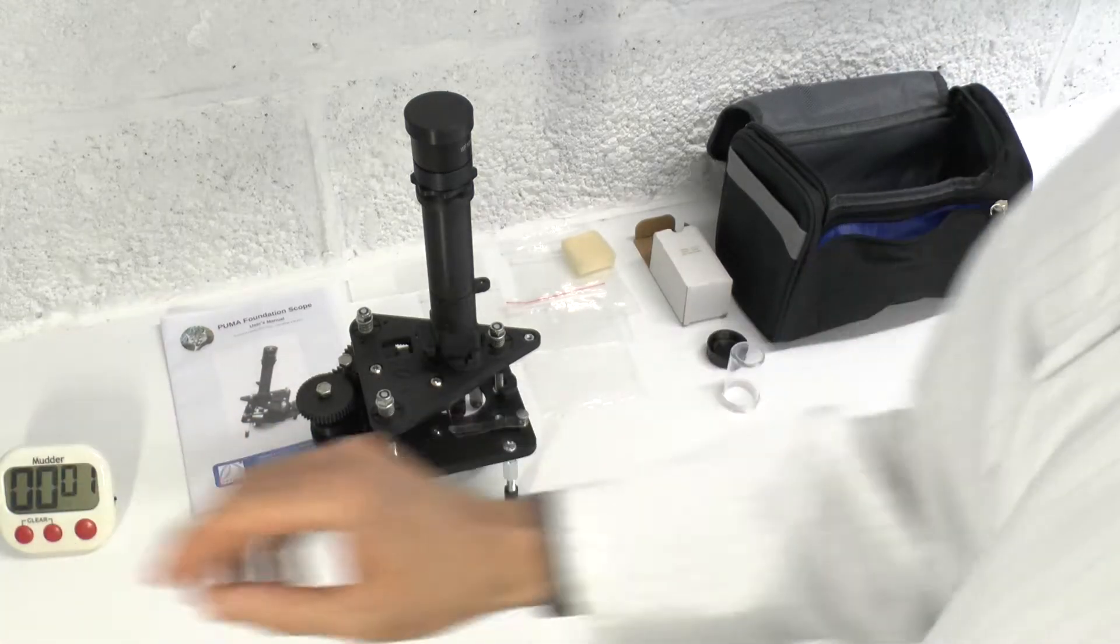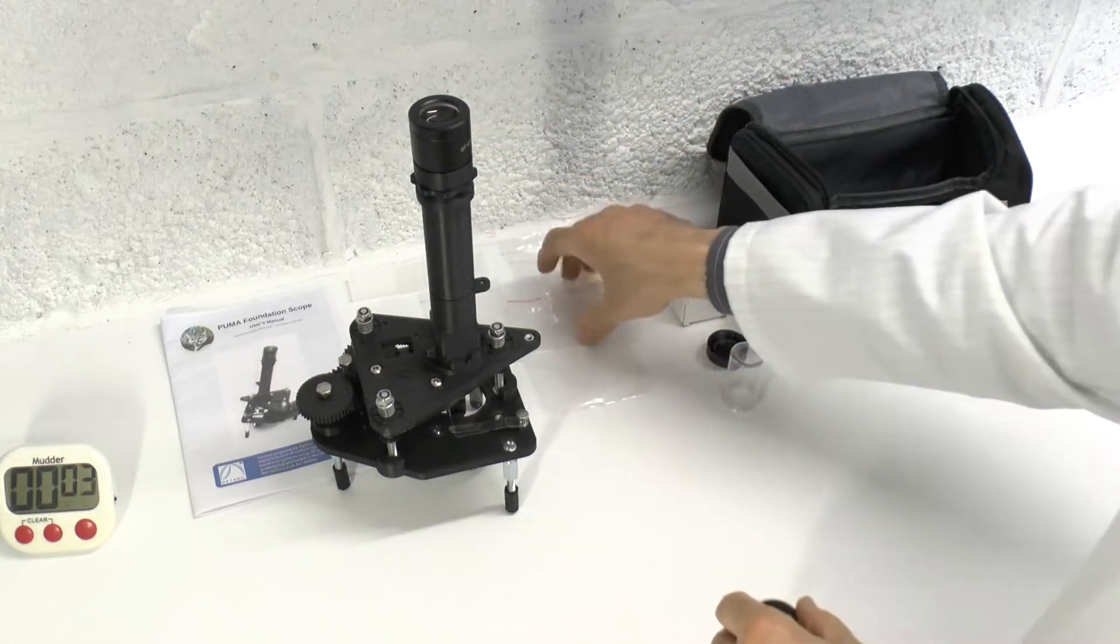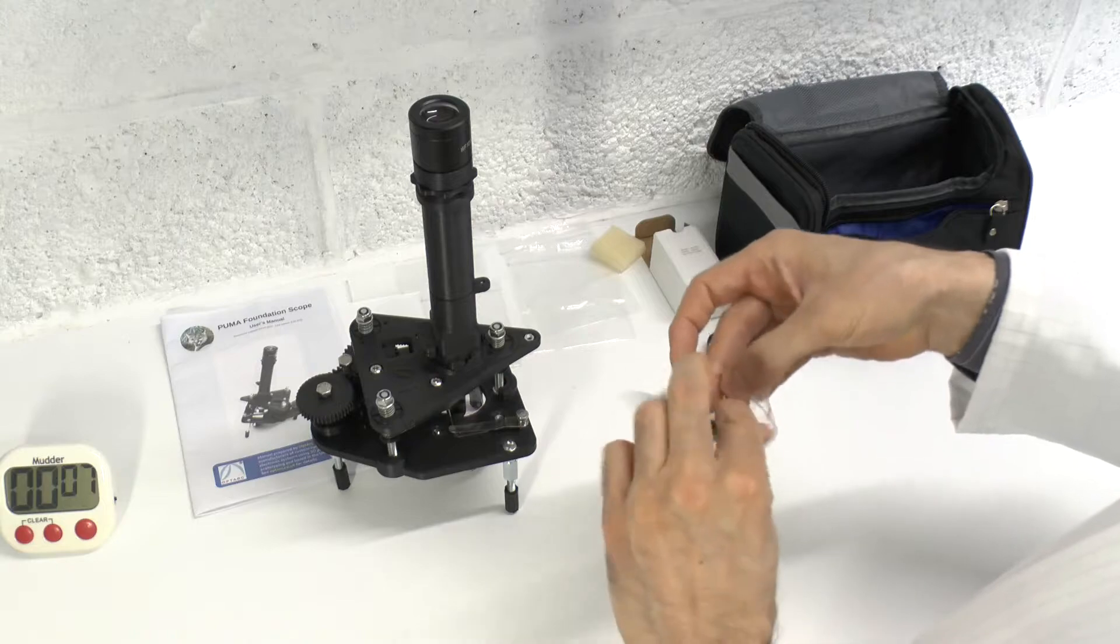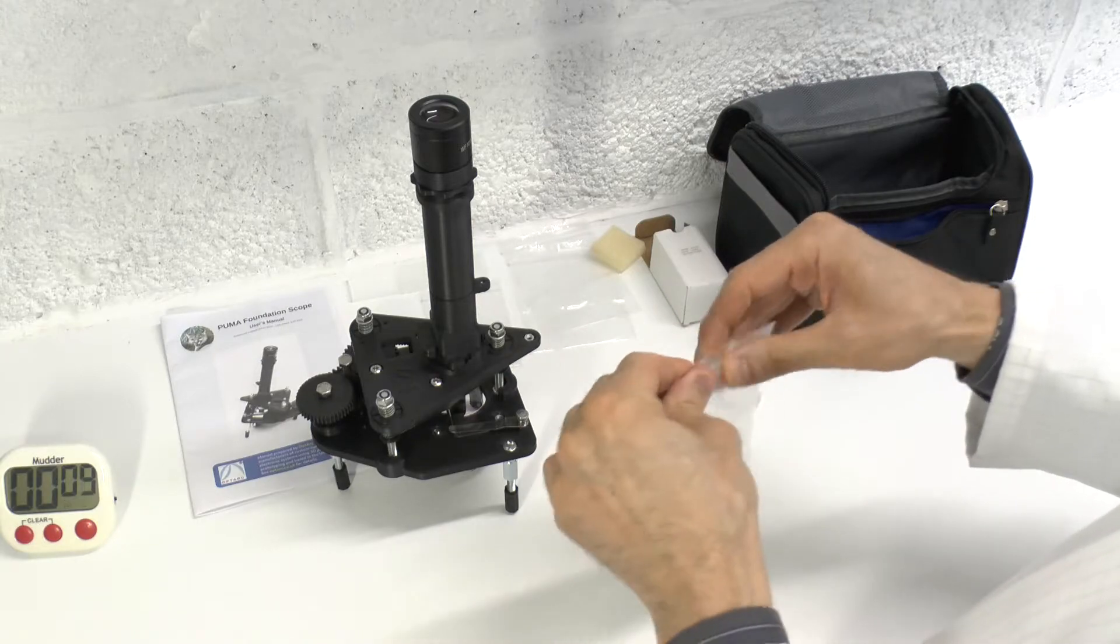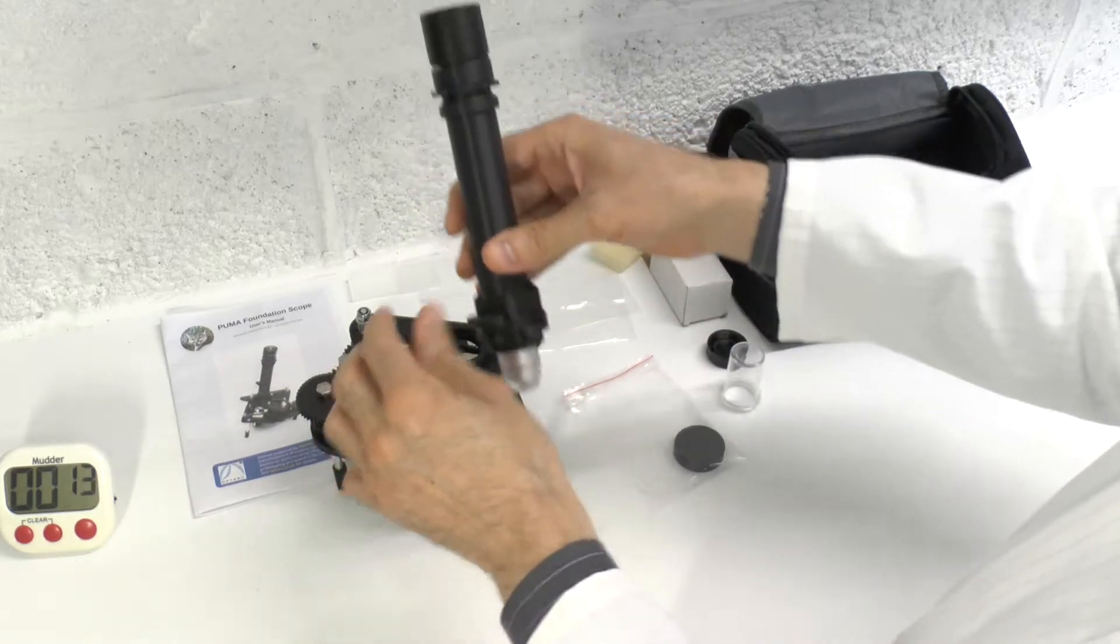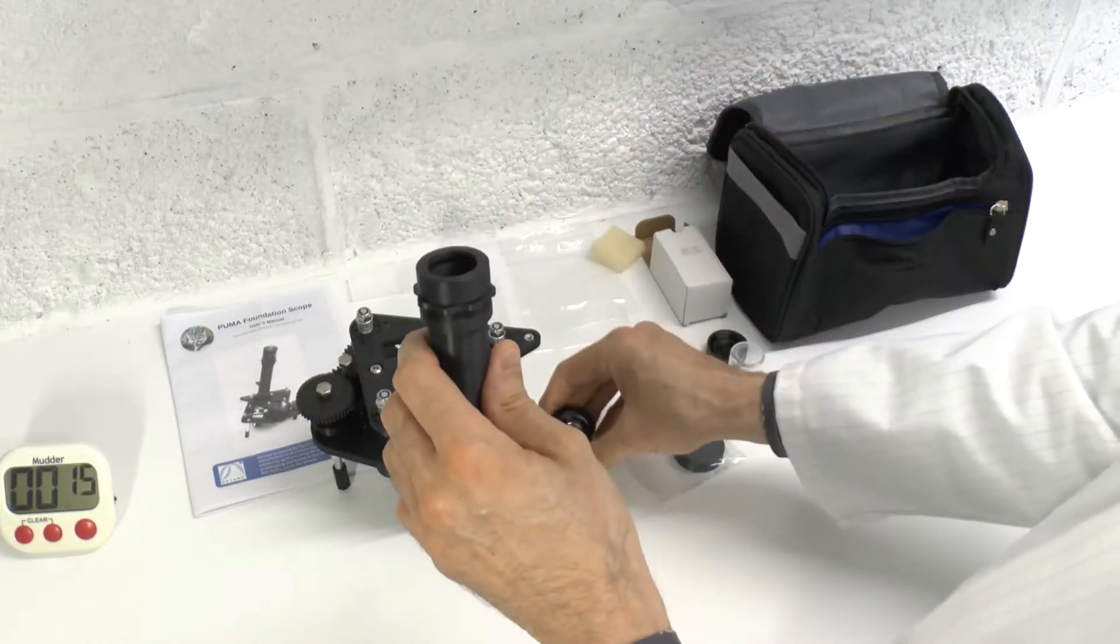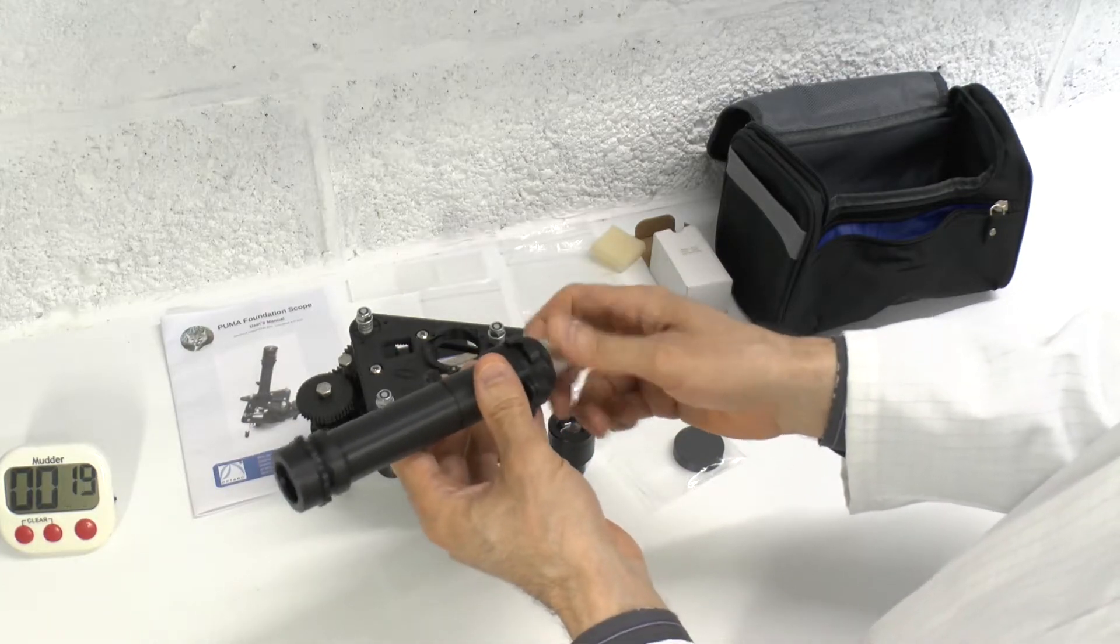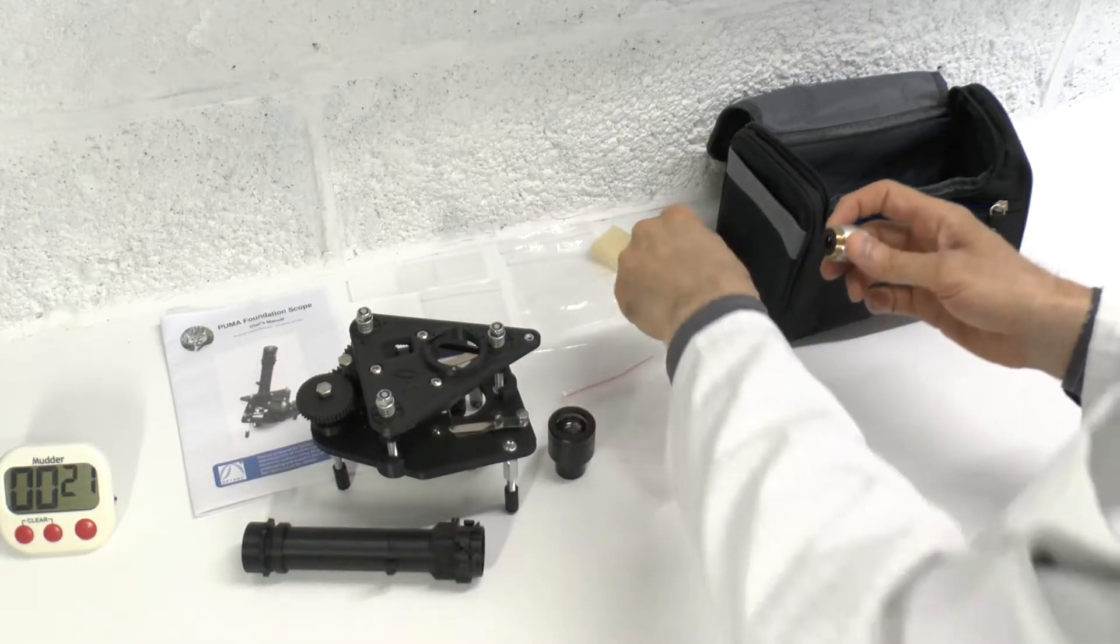To start, we remove the protective cap and put it in its protective pouch. Then remove the optical tube from the quick-release mechanism with a quarter turn anti-clockwise. Take off the ocular and unscrew the objective and put them in their protective cases.